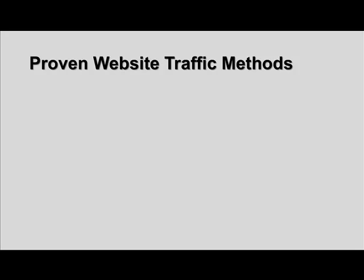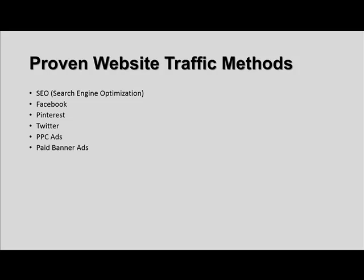Here are the 25 proven website traffic methods we'll cover over this two-part series. The first is search engine optimization (SEO). Then Facebook — an absolutely huge traffic source. Pinterest, a picture-sharing pin board site. Twitter. Pay-per-click ads like Google. Paid banner ads. Amazon, where you can get traffic through various channels. Blogging — one of the best traffic strategies out there. RSS submission, which syndicates your blog feed to many blog directories. And forum marketing.